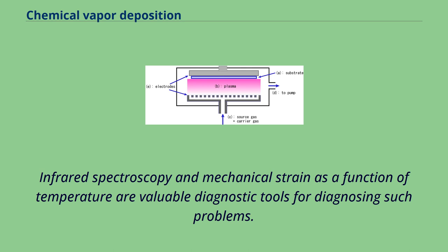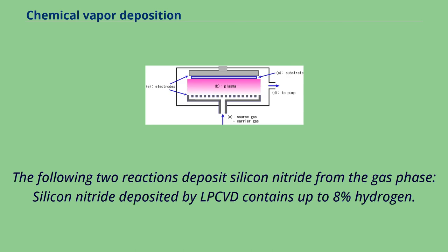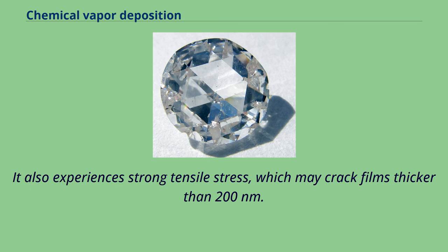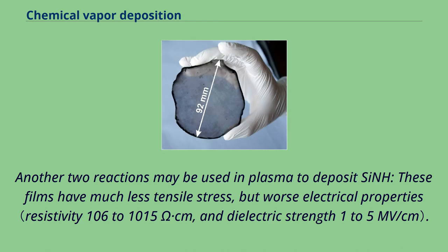Silicon nitride is often used as an insulator and chemical barrier in manufacturing ICs. The following two reactions deposit silicon nitride from the gas phase. Silicon nitride deposited by LPCVD contains up to 8% hydrogen. It also experiences strong tensile stress, which may crack films thicker than 200 nanometers. However, it has higher resistivity and dielectric strength than most insulators commonly available in microfabrication. Another two reactions may be used in plasma to deposit silicon nitride. These films have much less tensile stress, but worse electrical properties.